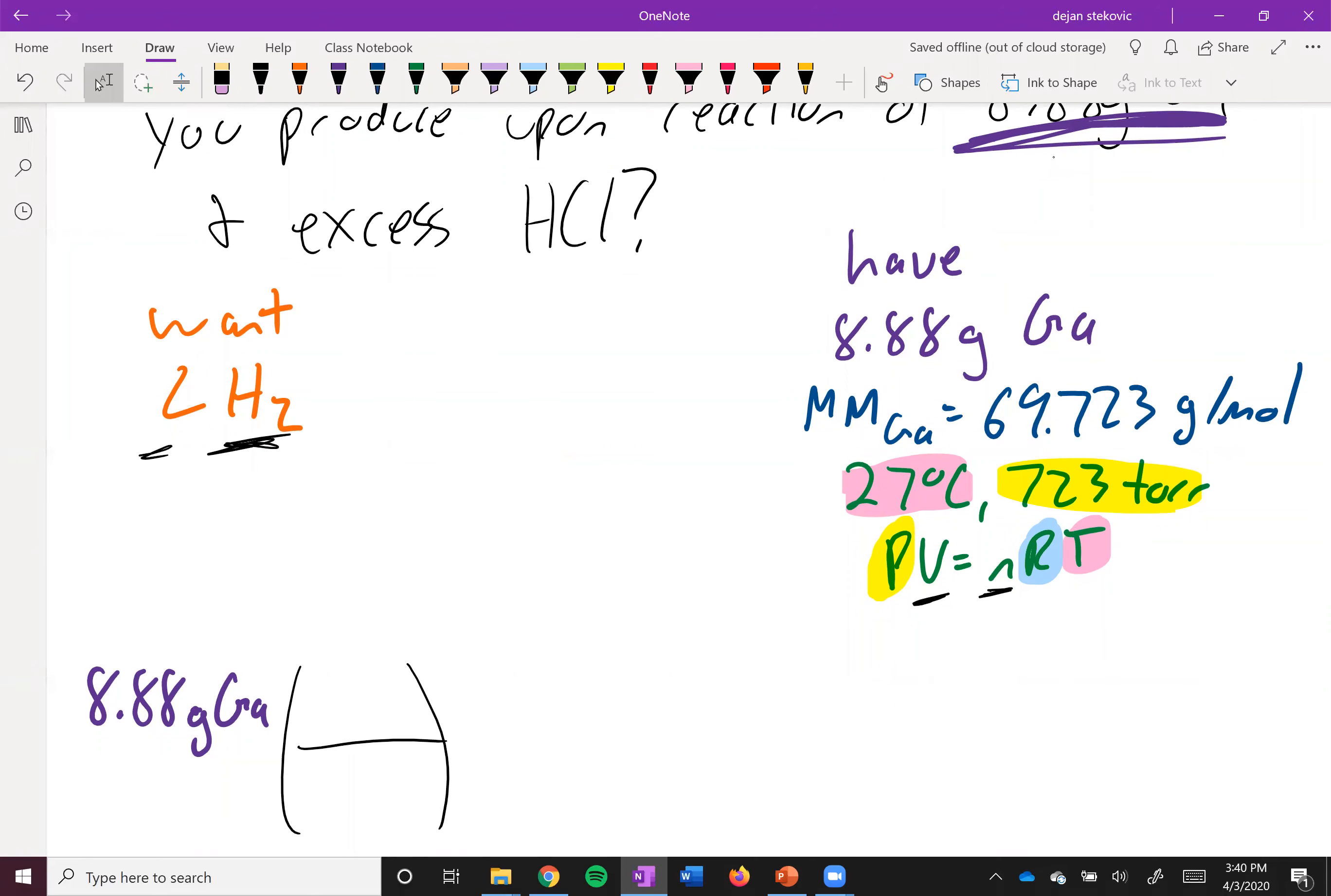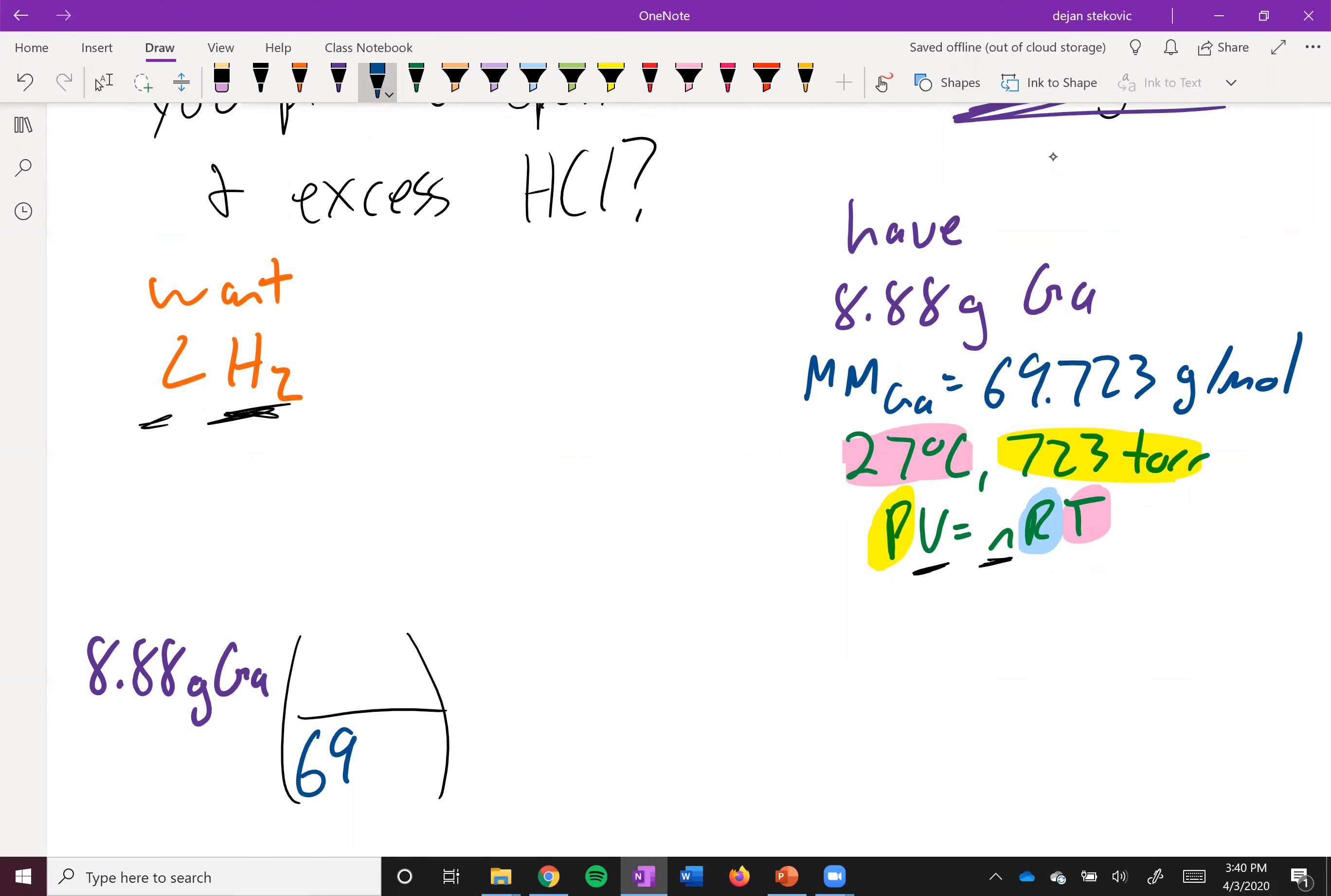So next thing we've got grams. We're going to change it to moles. So we've got grams up there. So 69.723 grams over moles. Cancel out these units. Now we're talking about moles of gallium.